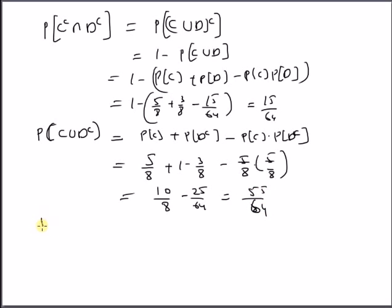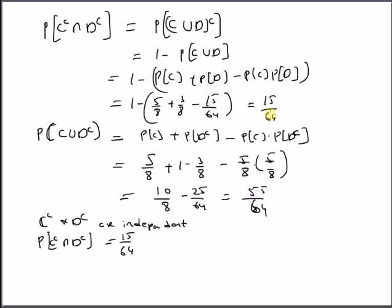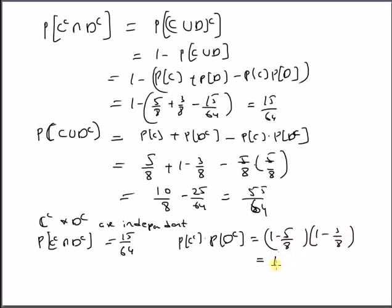Finally, we verify whether C complement and D complement are independent. Probability of C complement ∩ D complement is 15/64, and probability of C complement times probability of D complement also equals 15/64, confirming that C complement and D complement are independent. This follows from the fact that C and D are independent. Thanks for watching.